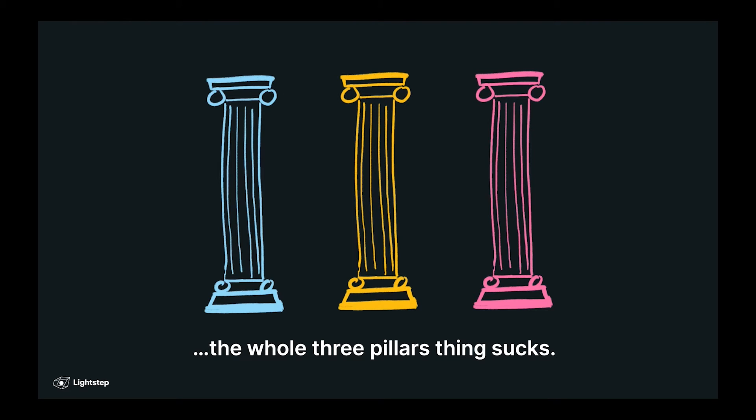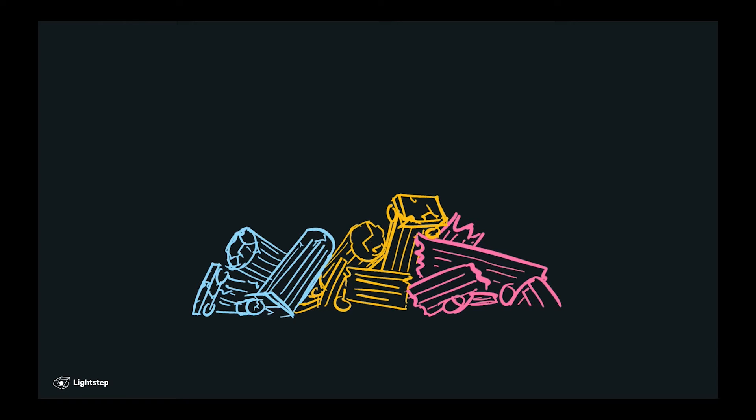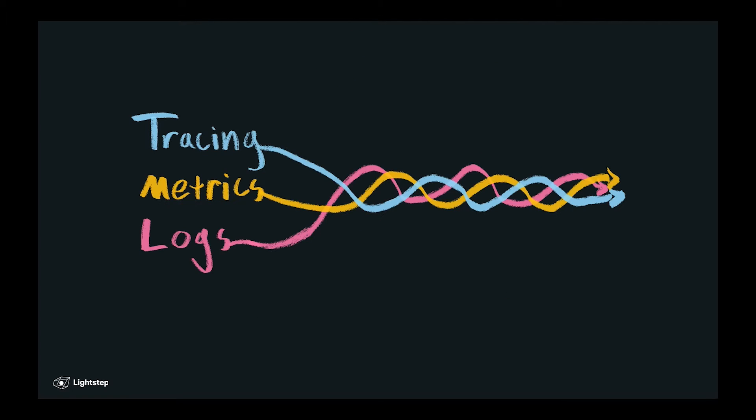Which means the whole three pillars thing sucks. So let's smash these three pillars, start from scratch, and come up with a new framework for thinking about observability for the good of humanity. And how we're going to do that is by taking these three different signals and combine them together.